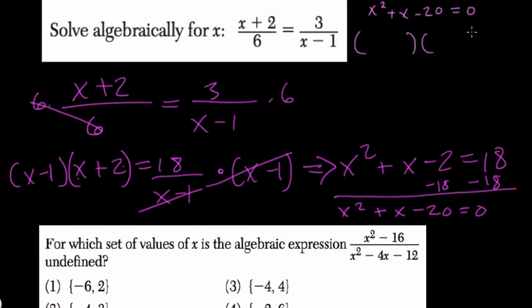What factors of negative 20 multiply to get negative 20 but add to positive 1? Remember, you're looking for factors that add to this number that multiply to negative 20 but add to this number here.